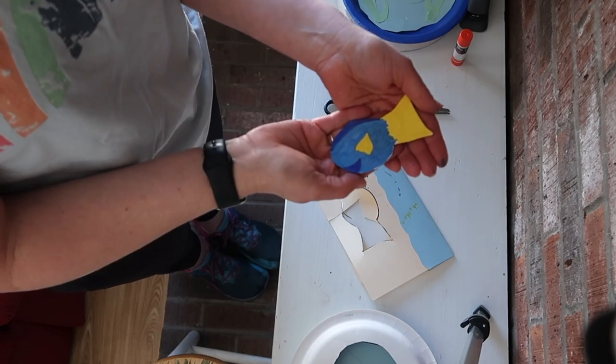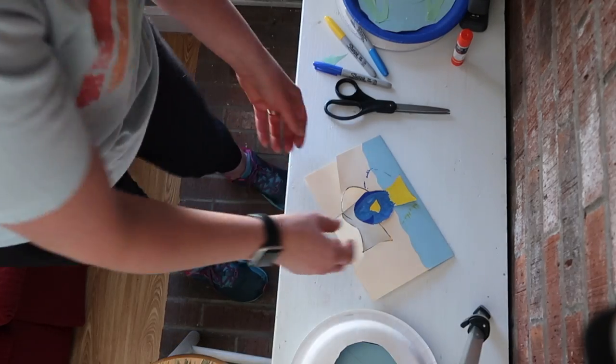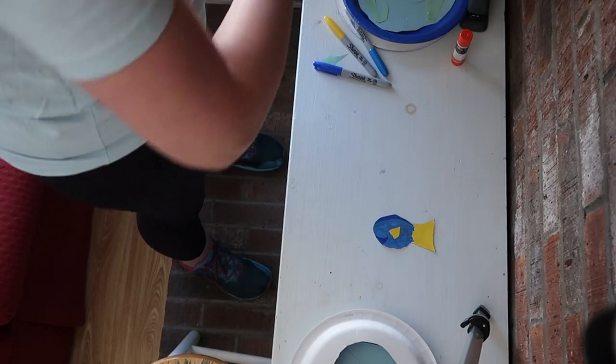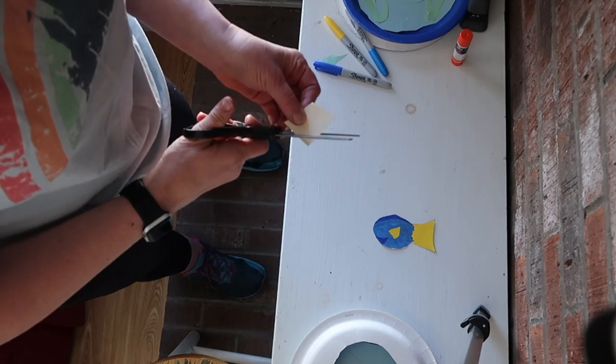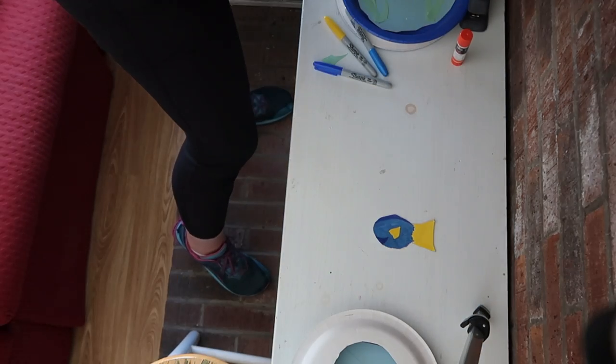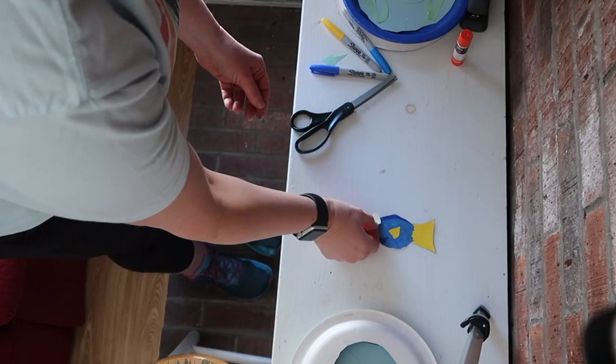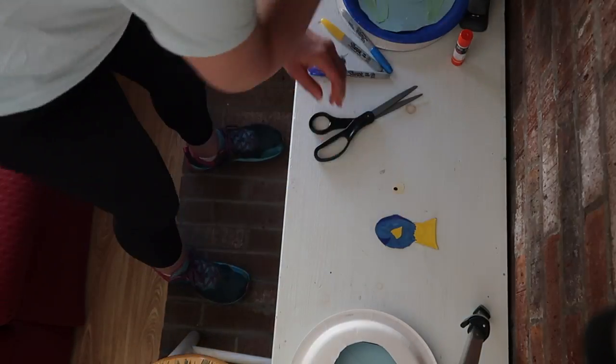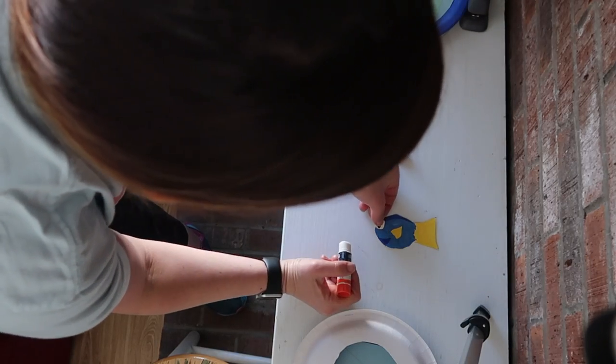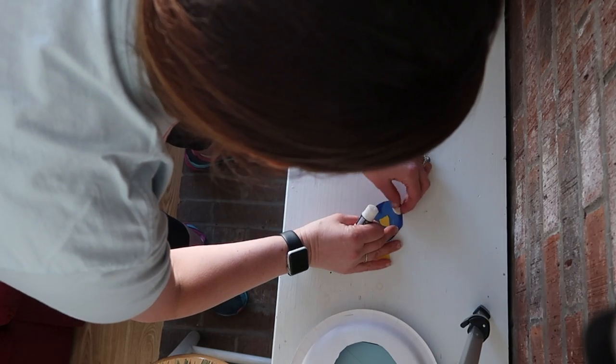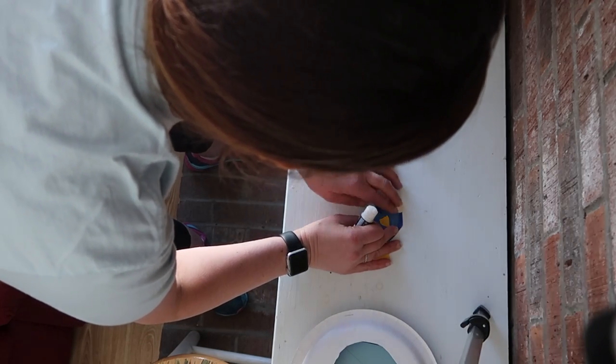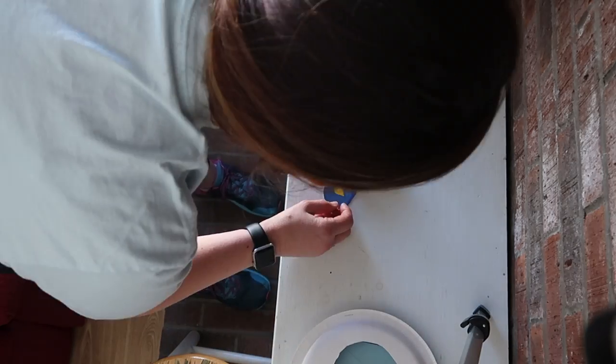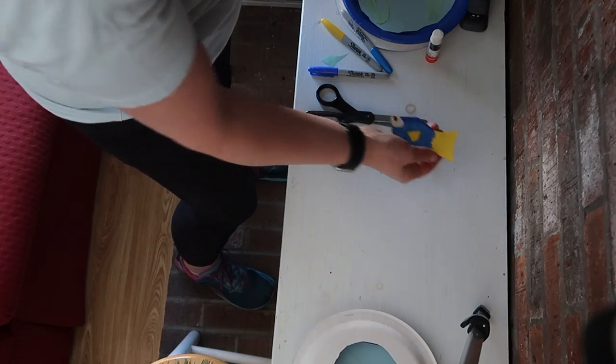Now Dory needs an eye. If you have a googly eye, that would be a great thing. We do not, so we're going to use our paper and cut out a little circle, kind of fix the circle. Glue. There you have a little Dory ready to go in her fishbowl.